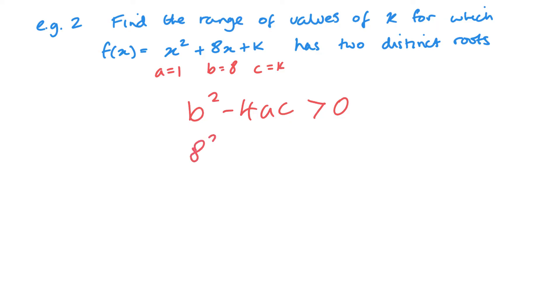So we've got 8 squared minus 4 lots of 1 lots of K, greater than 0. So 64 minus 4K is greater than 0. And you also could be careful when you're dealing with inequalities. The easiest way is to try and always avoid having to multiply or divide by negative numbers. So 64 is greater than 4K. And then if I divide by 4, I get 16. So K needs to be less than 16. And there is this question solved.